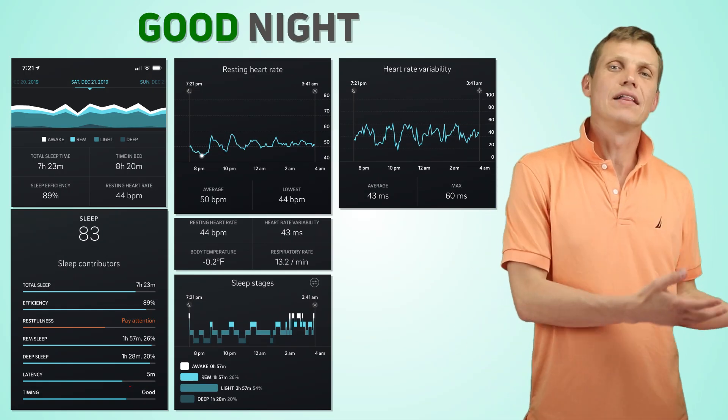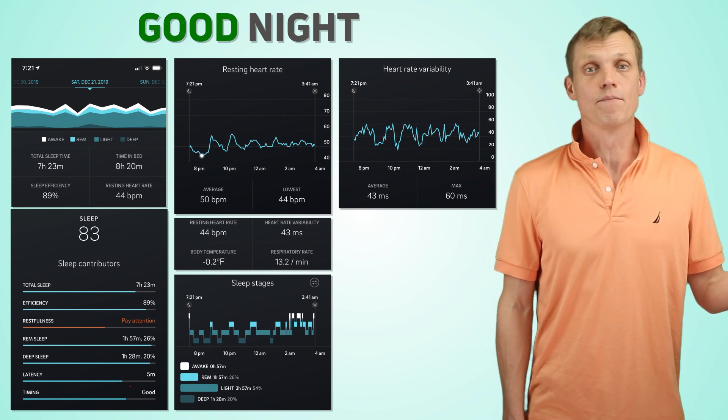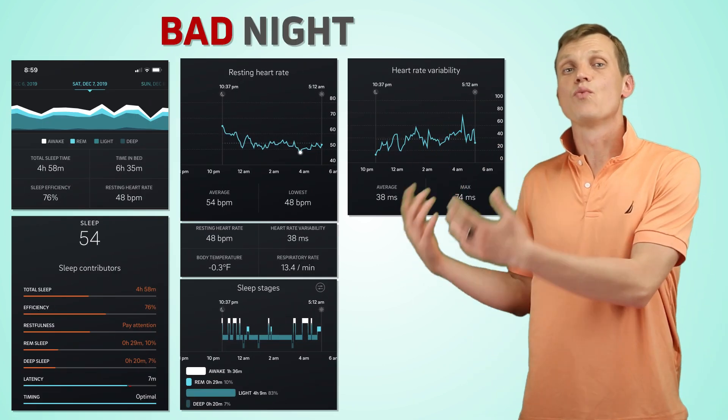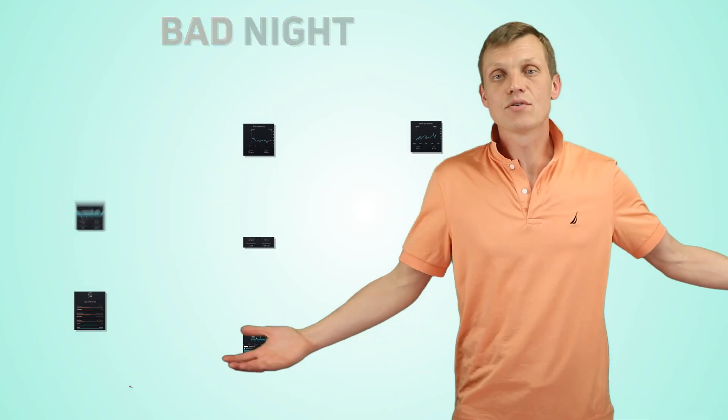This is examples from two nights that I tracked using the Oura Ring 2. On the first, I slept well and not to brag or anything, but I got a sleep score of 83. The other night didn't go as well. It was pretty bad and landed me a score of 54. As you can see, the Oura Ring provides a lot of interesting information to think about.